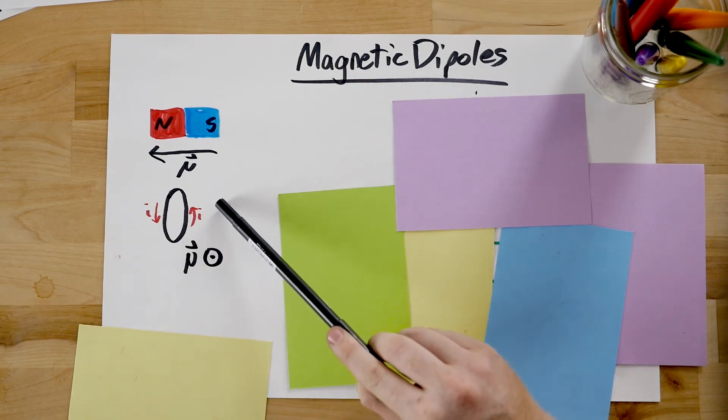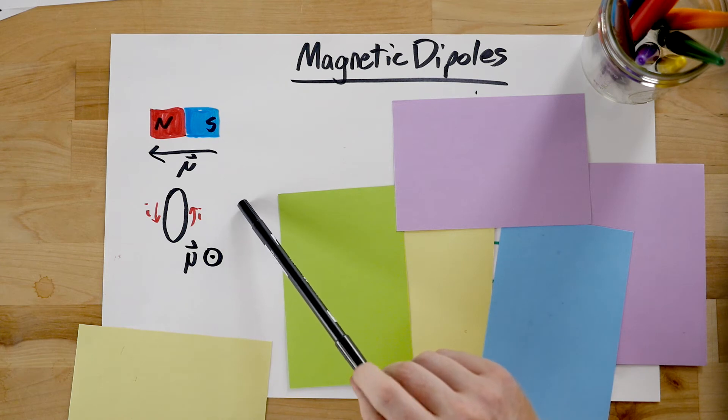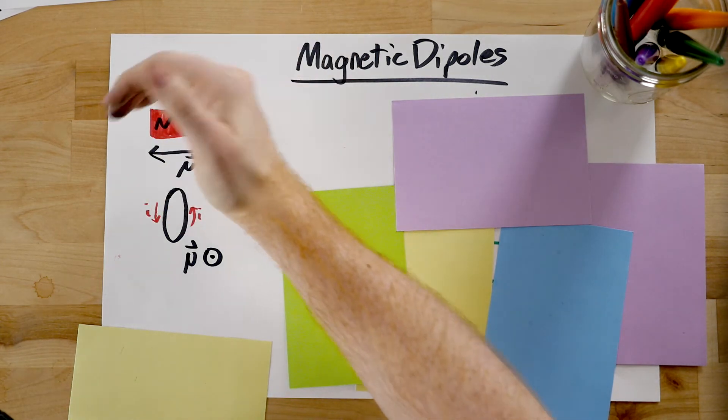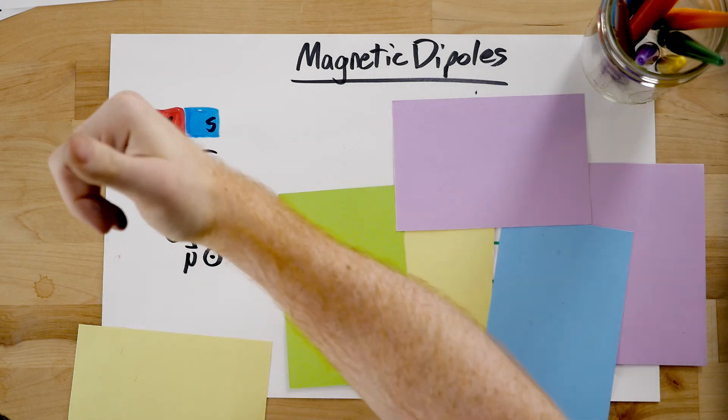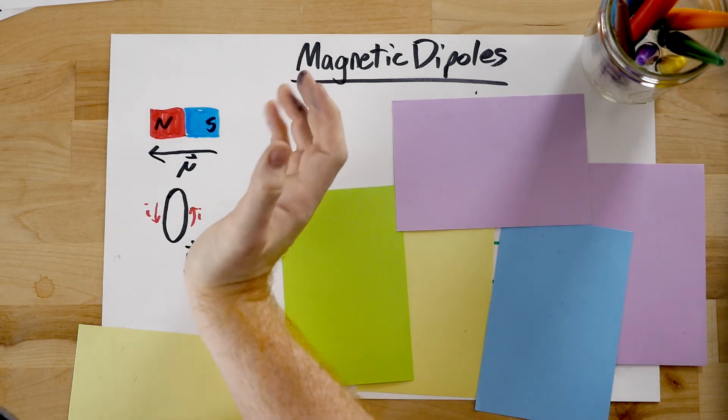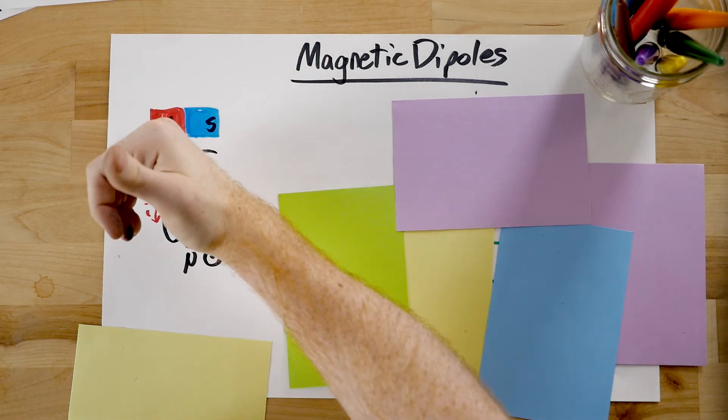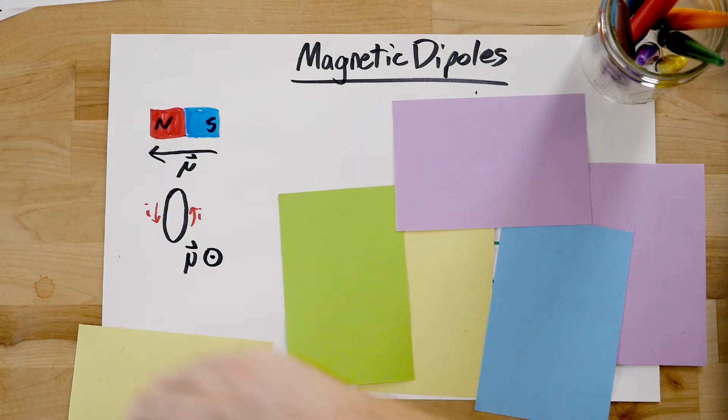For a current carrying loop, we actually have a right hand rule. If you curl your fingers in the direction of the current, you get the dipole moment vector. In this case, our counterclockwise current will correspond to a dipole moment pointing out of the page.